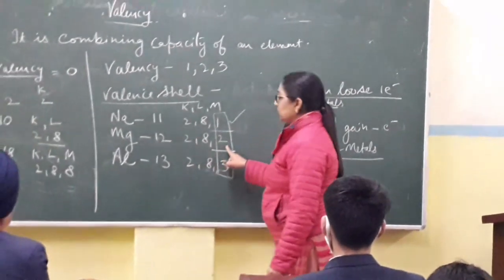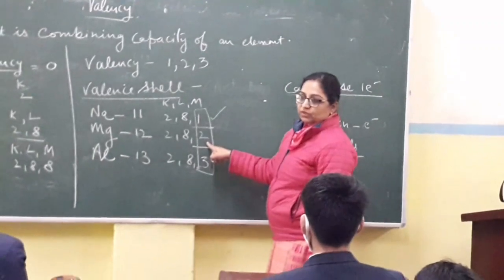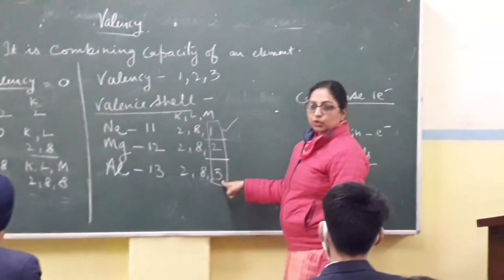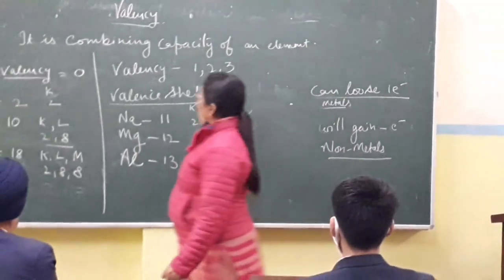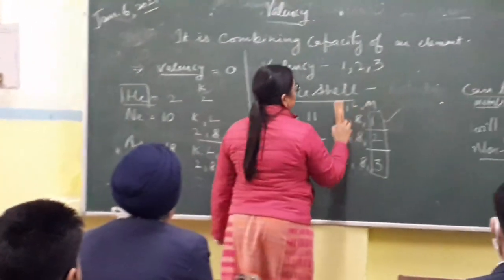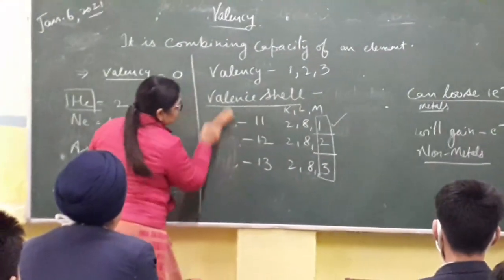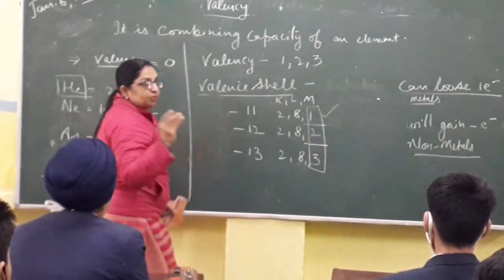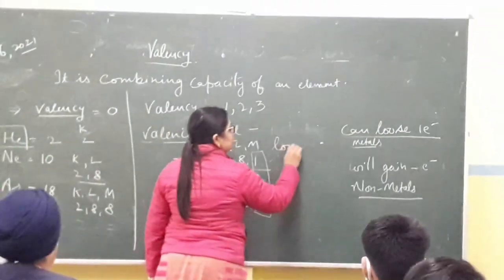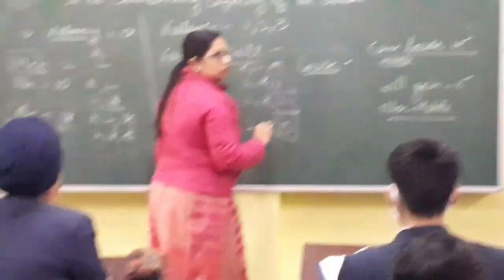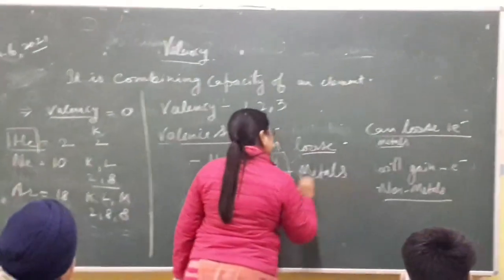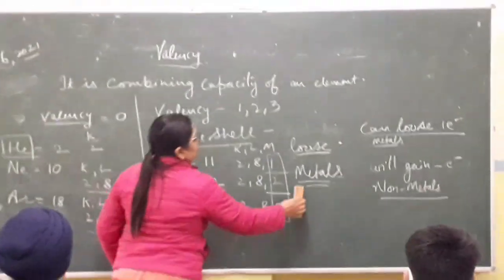Magnesium — valency two. Aluminum — valency three. One important thing to add: these elements have the ability to lose electrons, and those who lose electrons are metals. Keep that in mind.